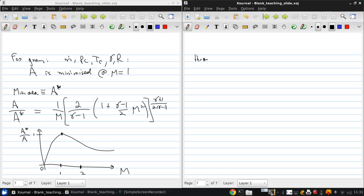Our throat area is A star and the exit area is A sub E, and the thrust is, as before, M dot UE plus AE times P minus P naught.